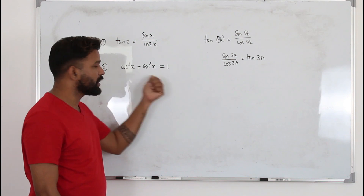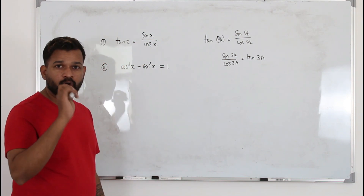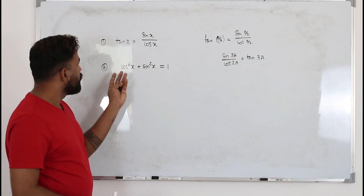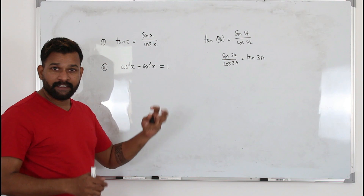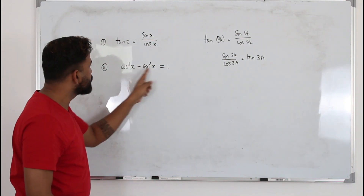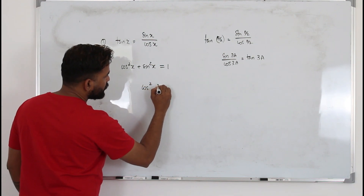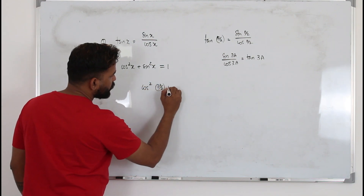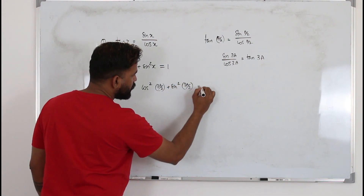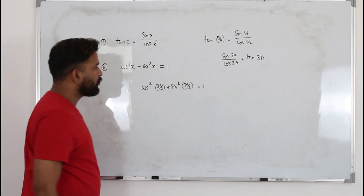In the second identity the power has to be 2 always. It cannot be power 3 or power 4 — you are not supposed to apply the identity when your power is not 2. But x can be anything. For example, you can have cos²(3a/2) + sin²(3a/2). As long as the argument is the same and the power is 2, you can apply this identity.